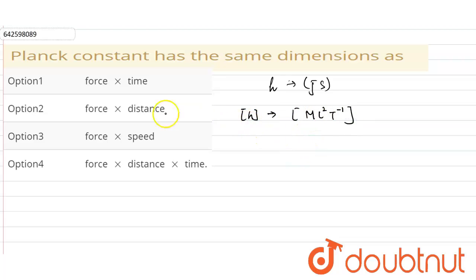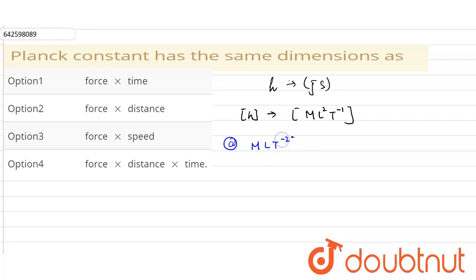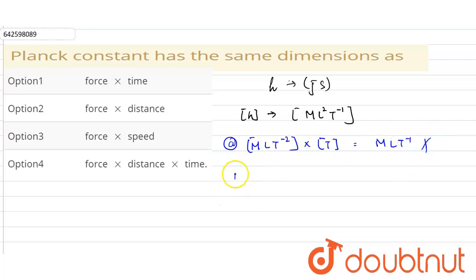Now checking from the given options. The first option is force into time. The dimension of force is MLT⁻², and multiplying by time T gives MLT⁻¹. This does not match ML²T⁻¹, so the first option is wrong.